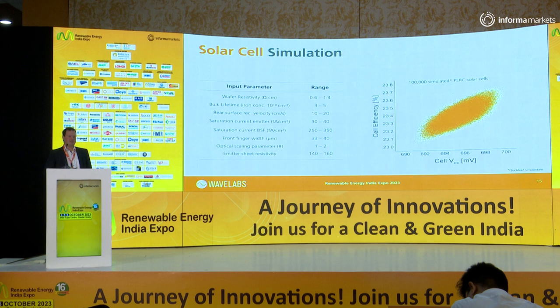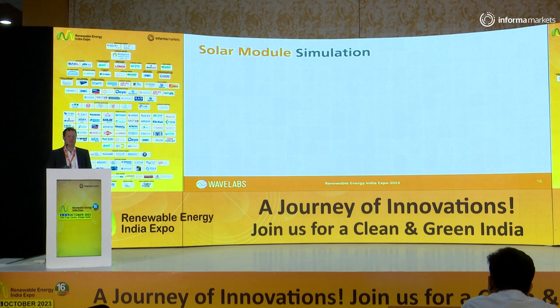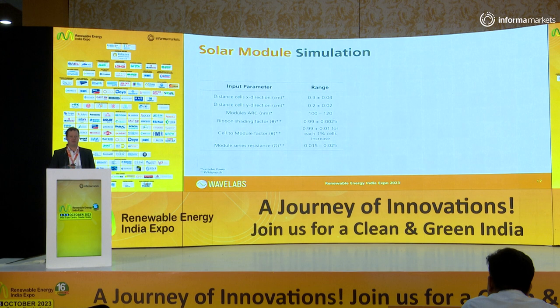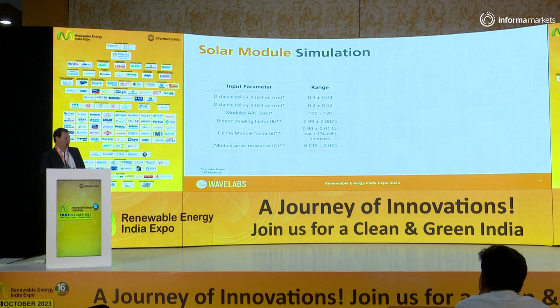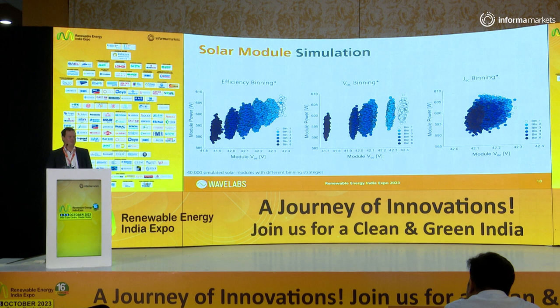These cells are now binned in the next step by three different approaches: by efficiency, by VOC, and by JSC. This is then given to the solar module simulation step. For this task, we used a combination of PV mismatch and SunSol. In addition to what we varied within the solar cells, we varied six different parameters in the module: X and Y position of the cells within the module, the module's anti-reflection coating, ribbon shading, the cell-to-module factor, and the solar module's resistance values. The result is three sets of 40,000 different simulated modules.